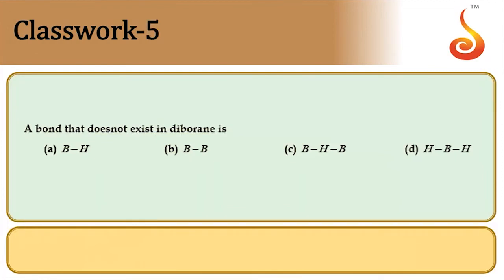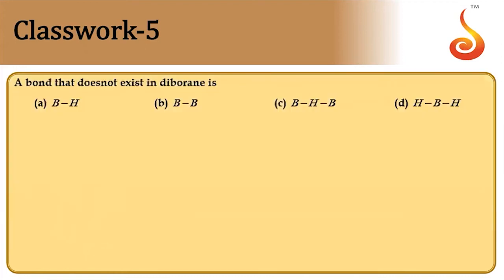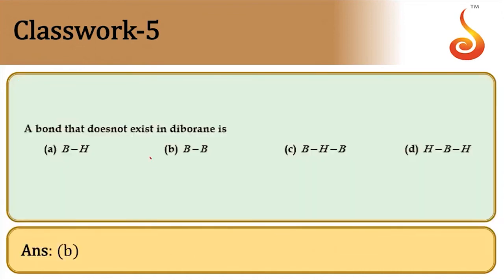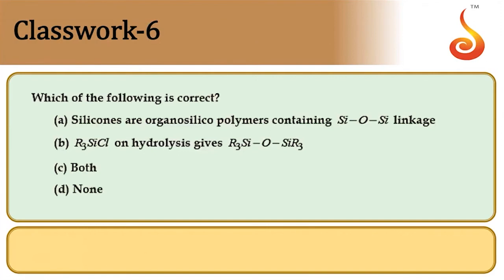Which bond does not exist in diborane? In the structure of B₂H₆: there are B–H bonds (normal), B–H–B (three-centre two-electron) bridge bonds, and H–B–H bonds, but there are no B–B bonds in diborane. Answer is option B.